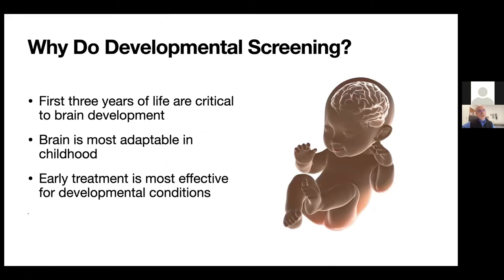In general, as we all know, the first three years of life are the critical times in neurodevelopment. It's when our brain is most plastic and most adaptable. Early intervention and early treatment is much more effective compared to later treatment for these children.